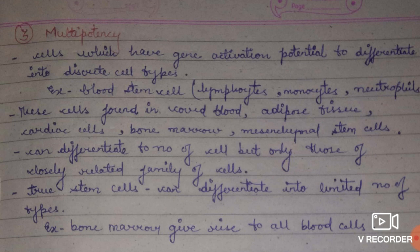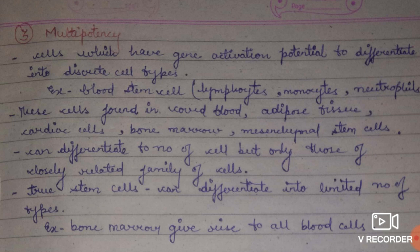Oligopotency refers to cells that can differentiate and give rise to only a few cell types. For example, bone marrow gives rise to a large number of blood cells, including lymphoid and monocyte cells. However, lymphoid cells become more specialized and can give rise to only B and T cells — not red blood cells. Oligopotent cells are those which can differentiate into only a few types.